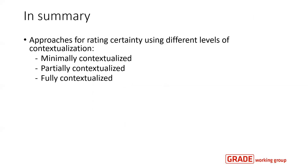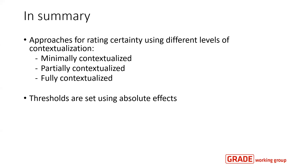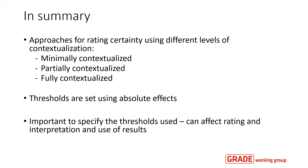In summary, we have three approaches for rating certainty using different levels of contextualization: the minimally contextualized approach using the null effect or minimally important difference; the partially contextualized approach specifying magnitudes of effect as trivial, small, moderate, and large; and the fully contextualized approach for decision-making using thresholds that consider all other important and critical outcomes and consequences. All thresholds besides the null effect should be set using absolute effects, and it's important to specify the thresholds used because they can affect the ratings and the interpretation and use of the results.